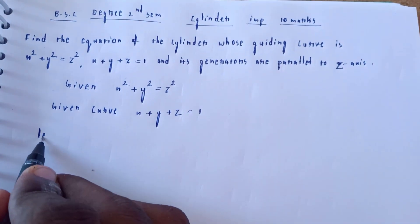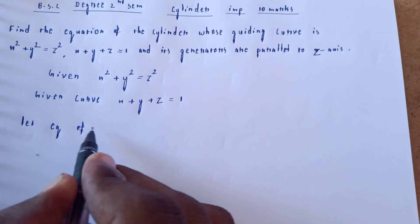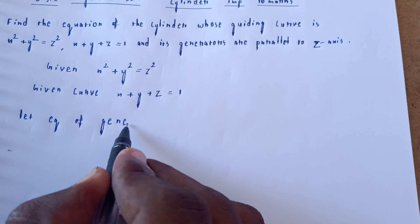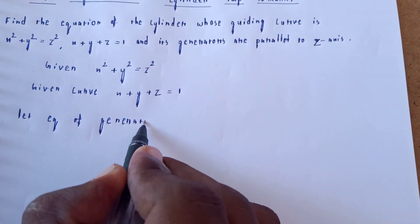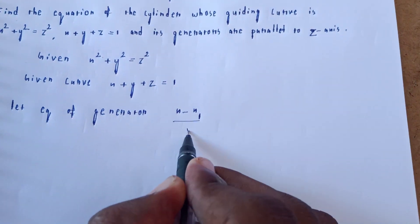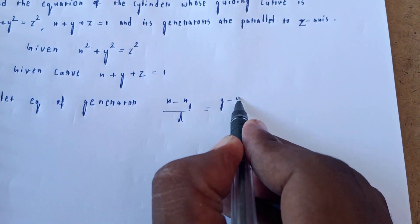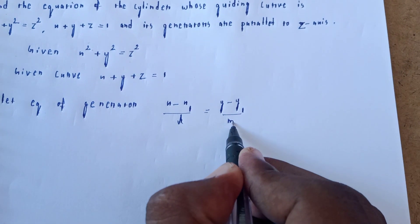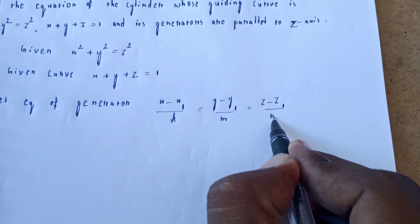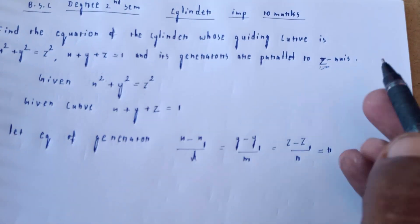Now write the equation of the generator. The generator is of the form: (x - x1)/l = (y - y1)/m = (z - z1)/n = r.